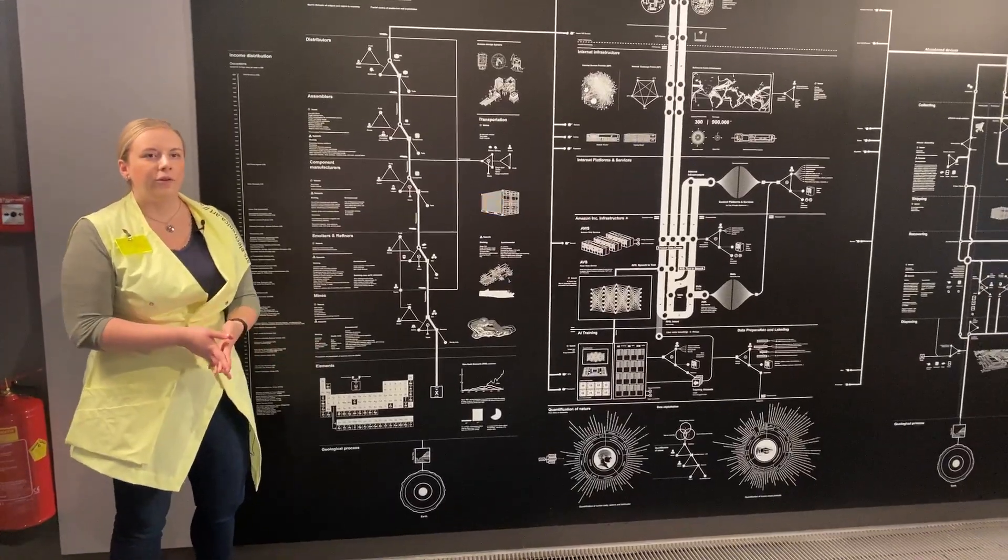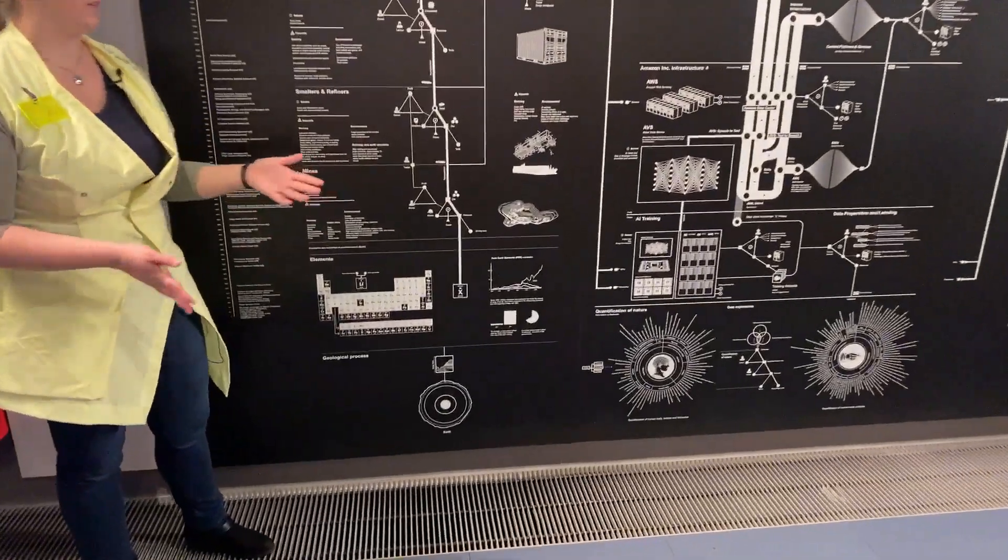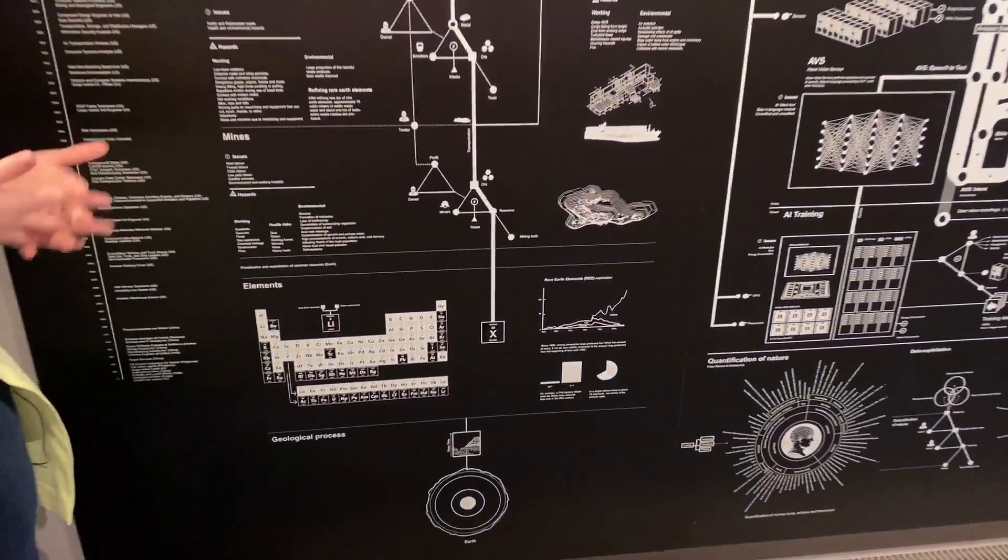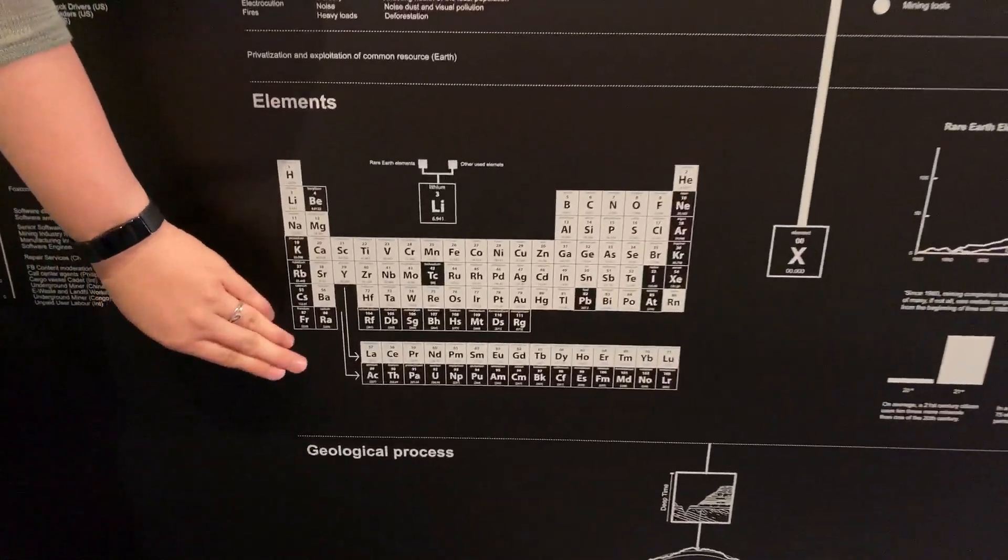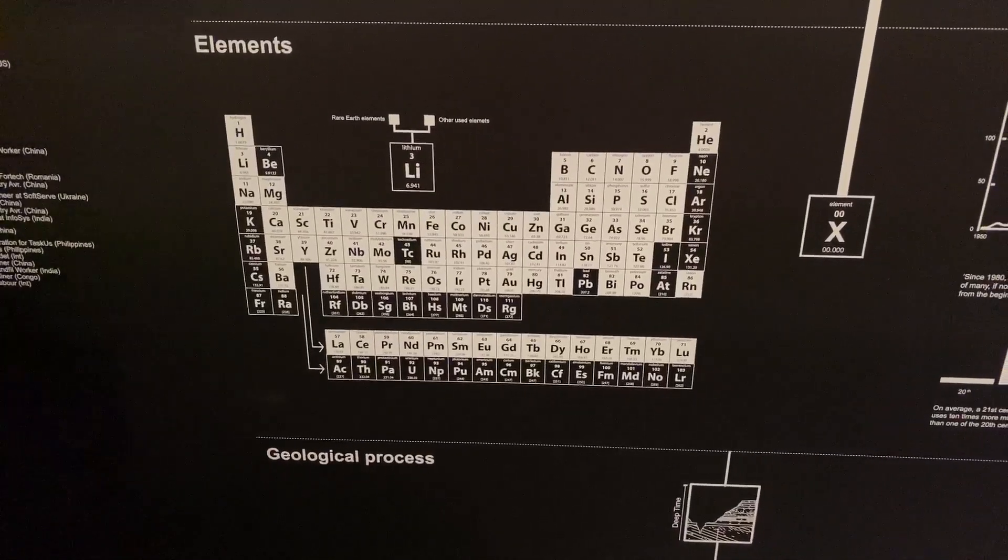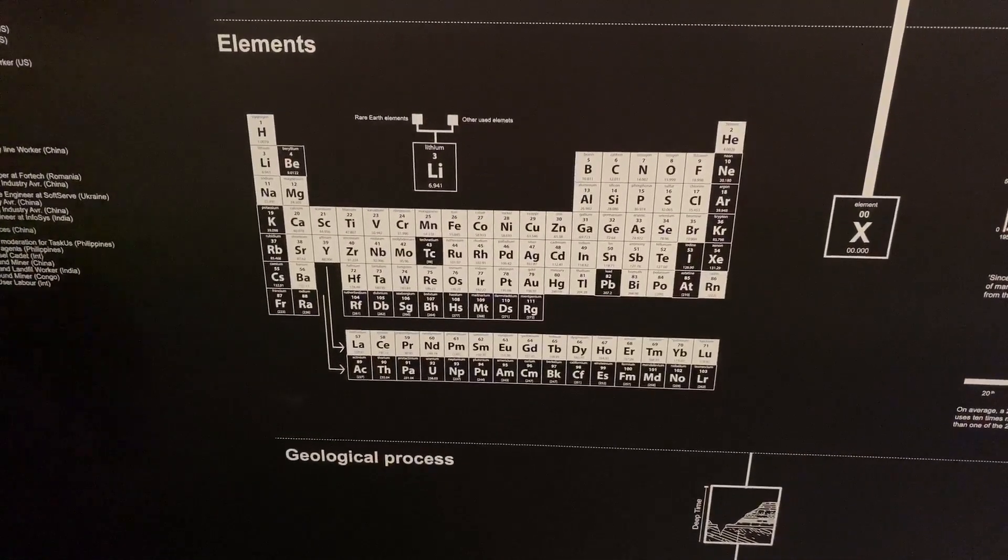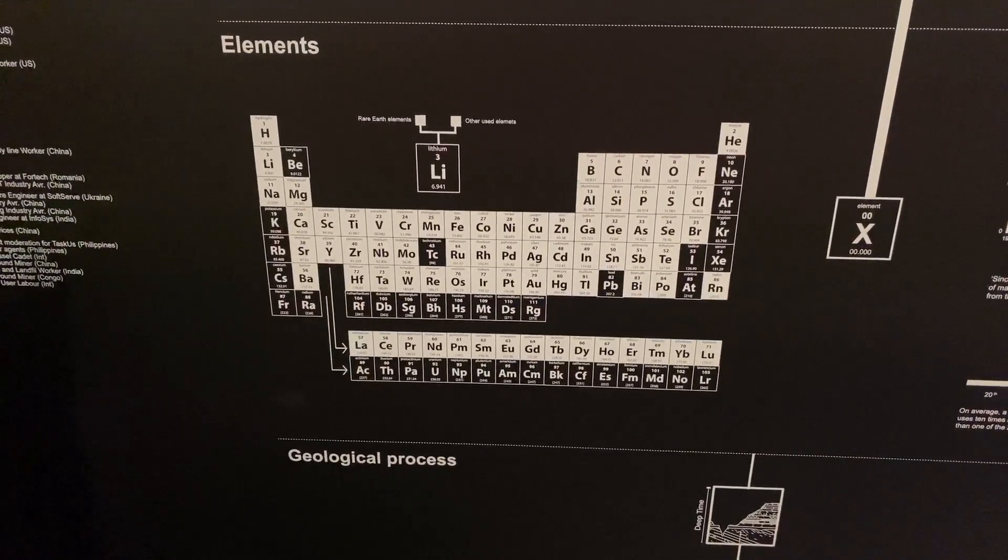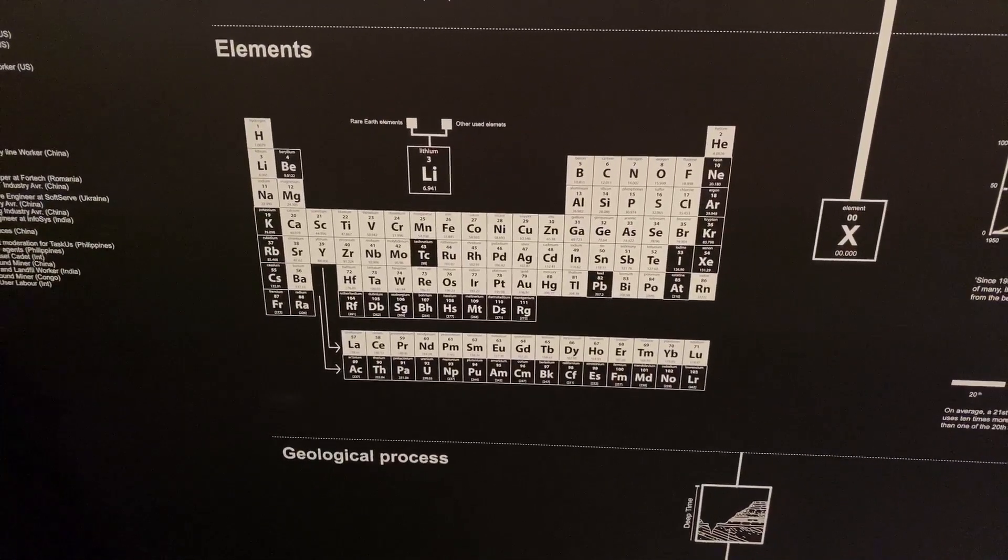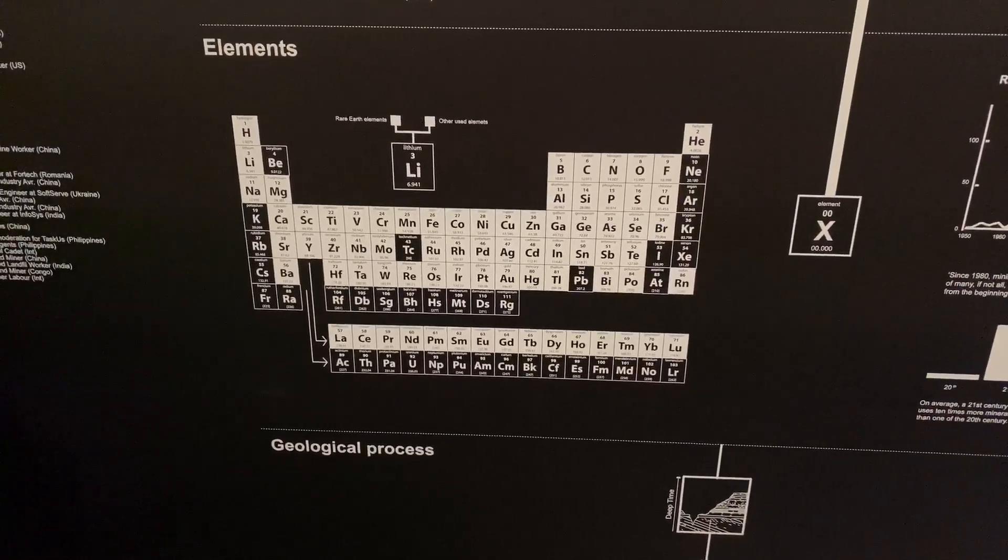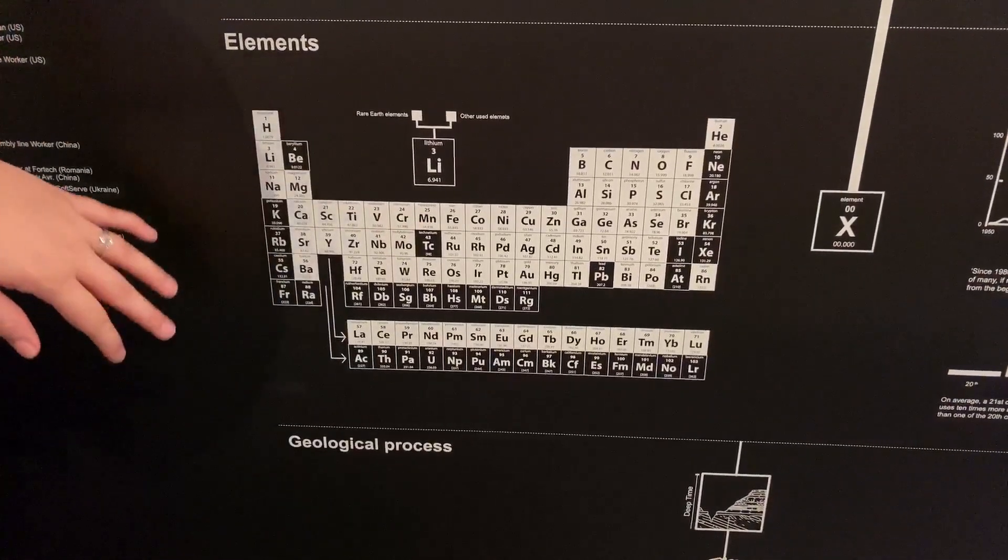So let's start with the very first part here. So what do we need in order to build such a system, to build such a computer, such an AI system? Well, to start at the very basic, we need the elements. We need the periodic table of elements. For a computer, we need lead, for example. For batteries, we need lithium, two of the elements found on our Earth. But there are many more that are necessary.